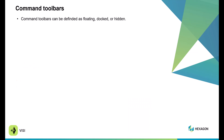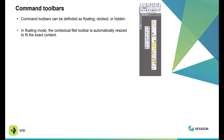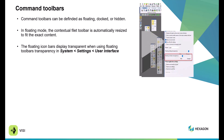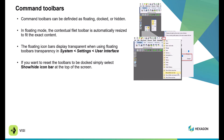Command toolbars can be defined as floating, docked, or hidden. In floating mode, the contextual menu fillet toolbar is automatically resized. You have the ability to make these toolbars transparent or not through the system settings user interface options. You can show, hide, or reset the toolbars as you choose and bring it back to how older versions worked. This floating toolbar box allows you to use more of the interface. There's a drop-down to show or hide and bring back your styles the way you used to see them.